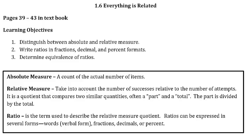Relative measure takes into account the number of successes relative to the number of attempts. It is a quotient that compares two similar quantities. Often it's the part and the total that are being compared. The part is divided by the total.